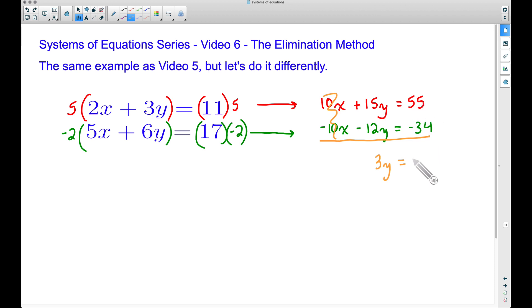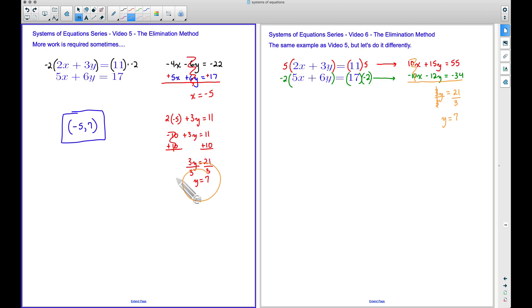We can quickly get y by itself by dividing both sides by 3. Therefore we have y equals 7. Check it out, back in video 5 we got y equals 7.